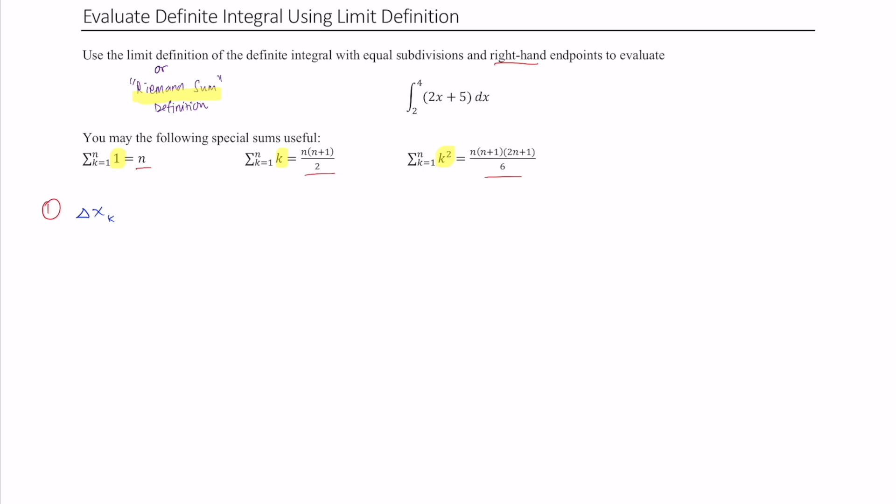It's going to be the same calculation as you've done before, it's going to be b minus a all over n by definition. So what is our b and what is our a? Well that depends on your bounds over here. The integral goes from a to b, the definite integral. So that means our delta x sub k will be for this problem 4 minus 2 over n, and if you simplify that we just get 2 over n. That's our first step.